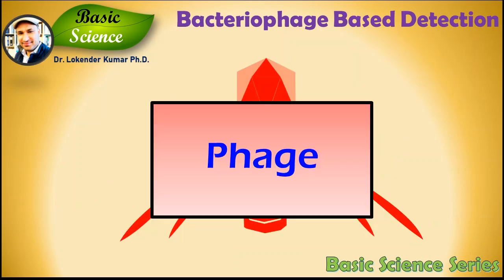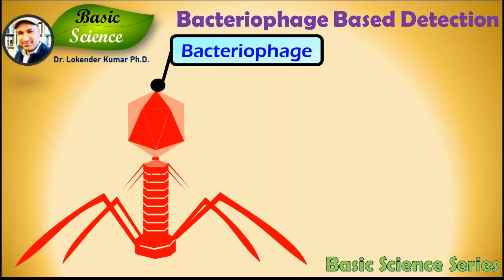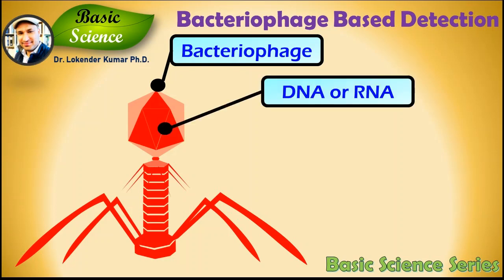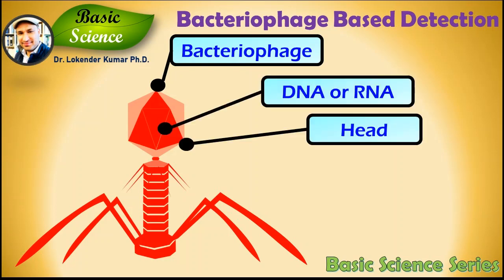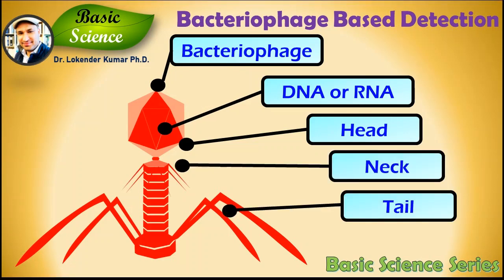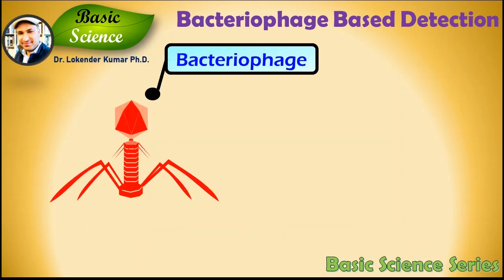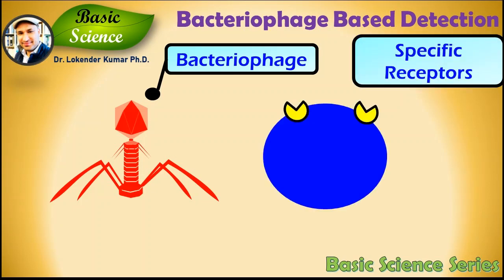A bacteriophage is a virus that infects and replicates within bacteria. They are composed of proteins and have DNA or RNA as their genetic material. It has a small neck section that connects the tail sheath with the head, and at the tail end it contains tail fibers required for binding with bacterial receptors. Bacteriophages attack specific bacterial populations — a bacteriophage can infect only certain bacteria bearing the receptors to which they can bind, which determines the phage host range.